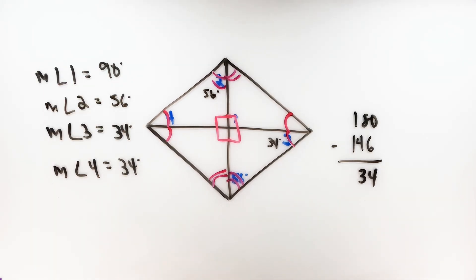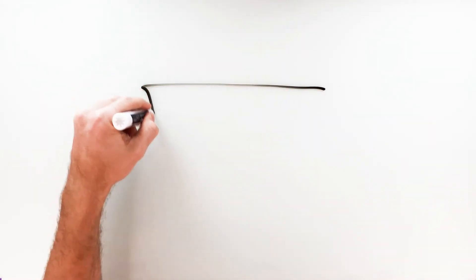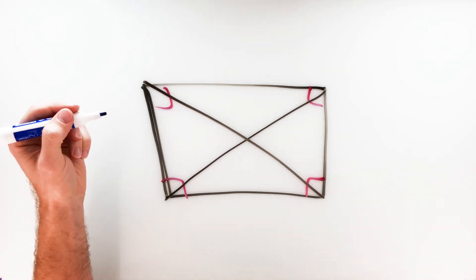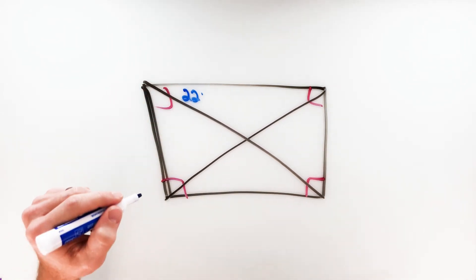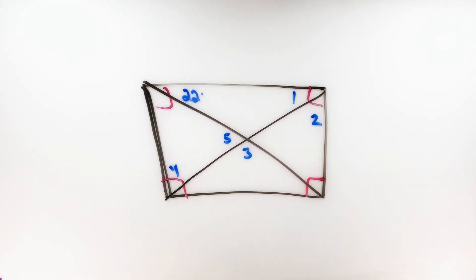What you'll find with rhombuses is you get a lot of congruent pieces because you have those four congruent triangles, and you can translate a lot of your angles into different places. Now let's skip over to a rectangle example. We'll draw the diagonals in the rectangle, label five angles, and use a given angle of 22 degrees to find all five.